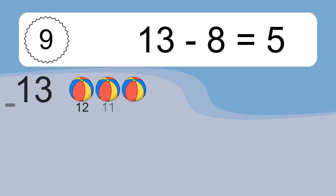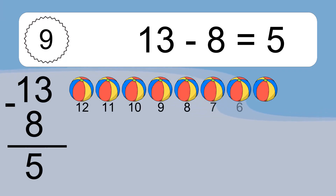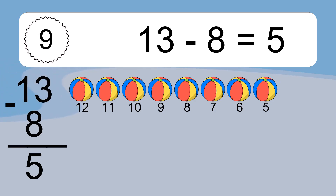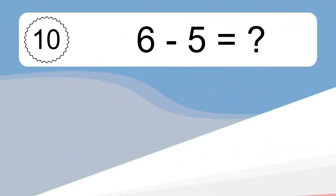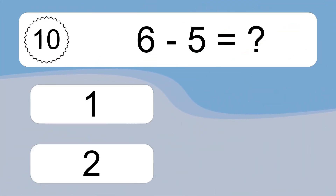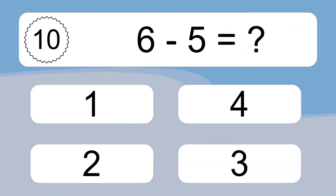13 minus 8 equals 5. Let's count it. 12, 11, 10, 9, 8, 7, 6, 5. 6 minus 5 equals what?